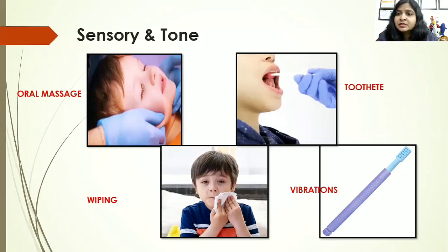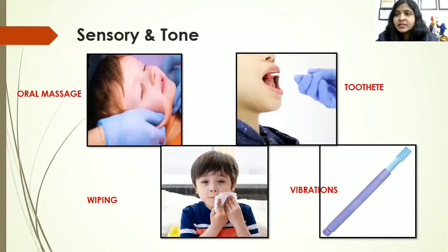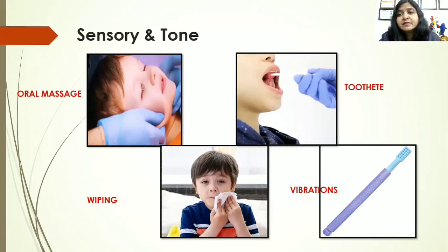You can also use a toothette — a sponge kind of swab that gives a good amount of oral stimulation. Wiping the face throughout the day with different textures of cloth is another strategy that can be used. Vibrations — for a low-tone child should be used in quick rapid motions; for a high-tone child it should be a little sustained to cause relaxation of the muscles. But vibrations should be used very judiciously. Too much vibration given to the child can cause issues that were not existing — especially mouthing issues or drooling issues, which are very often caused by wrong usage of vibrations.